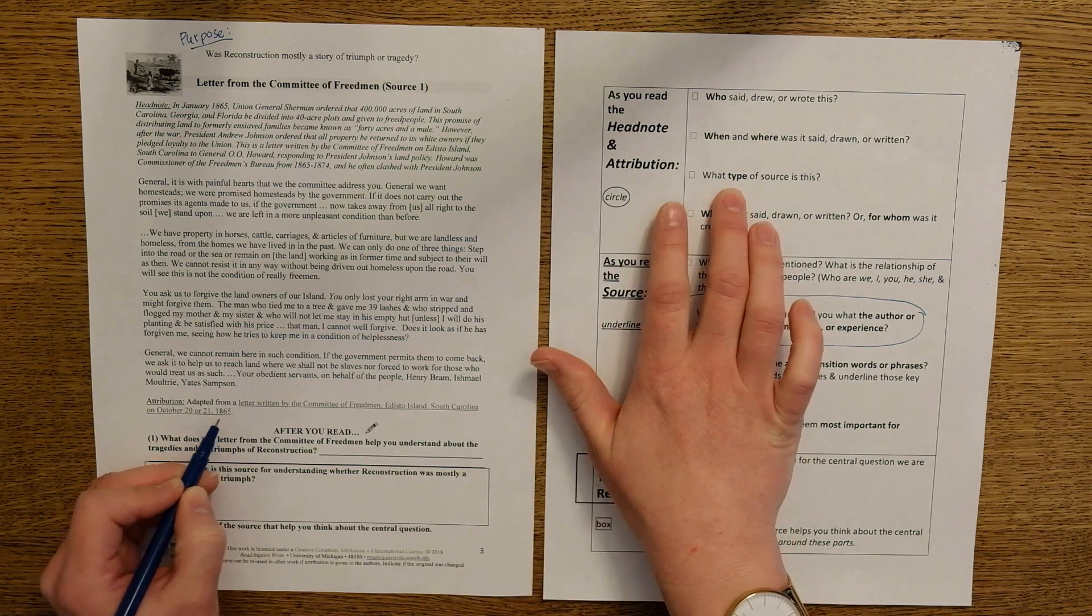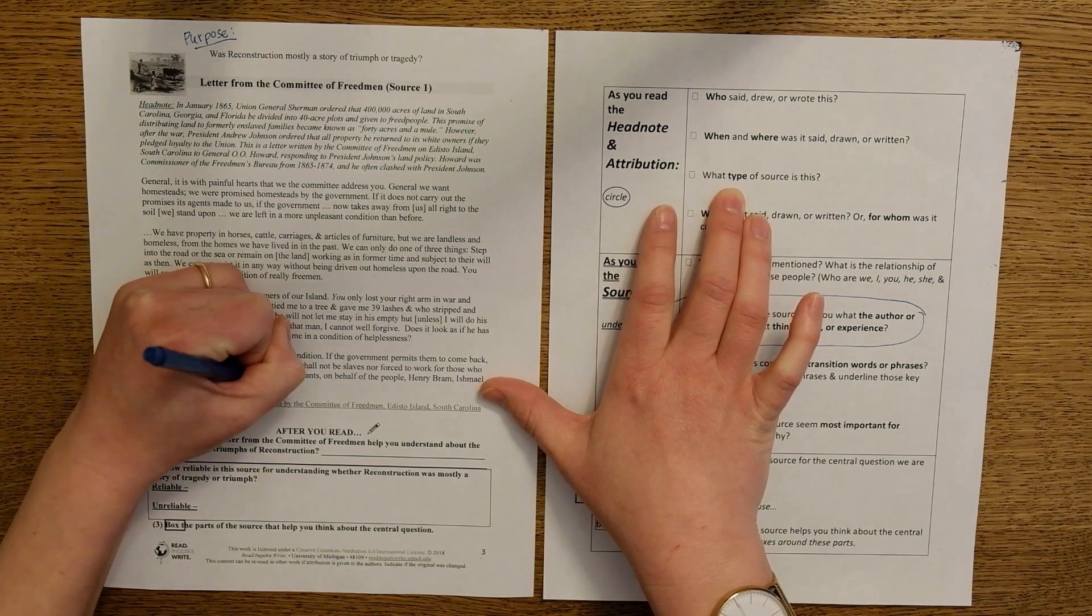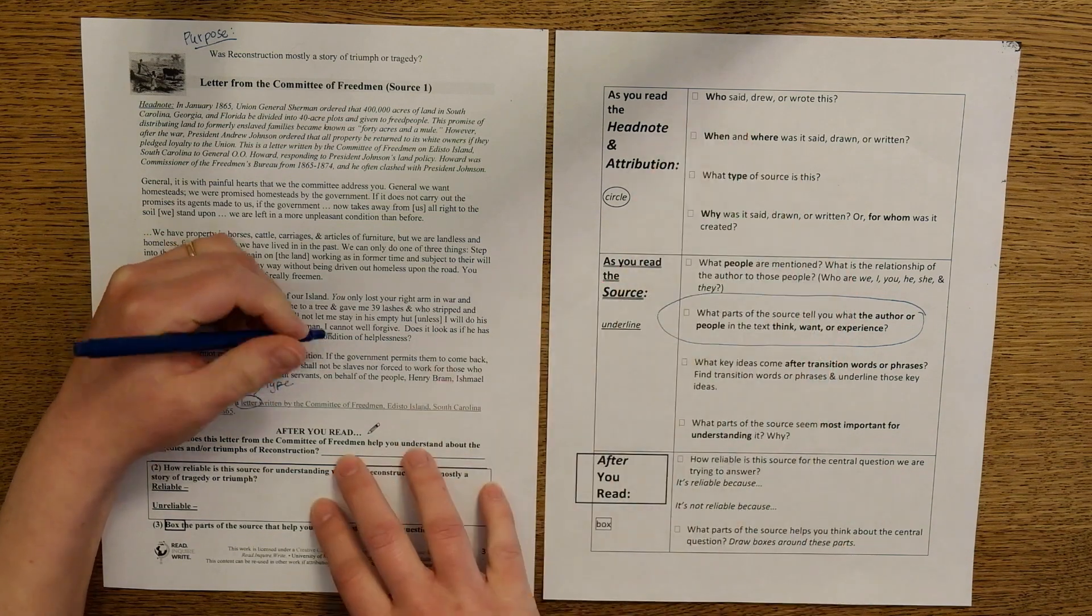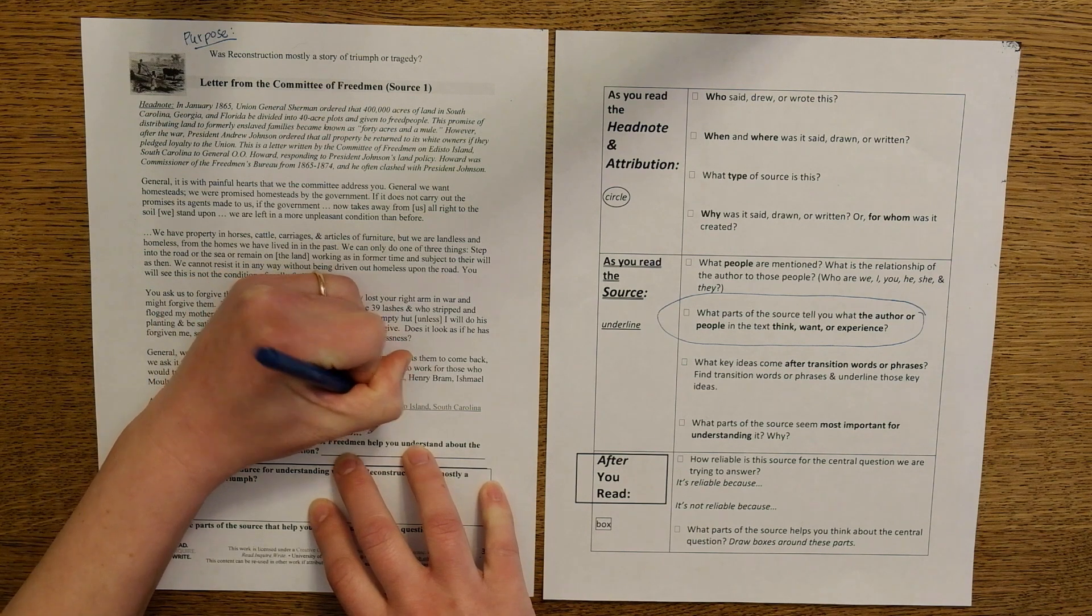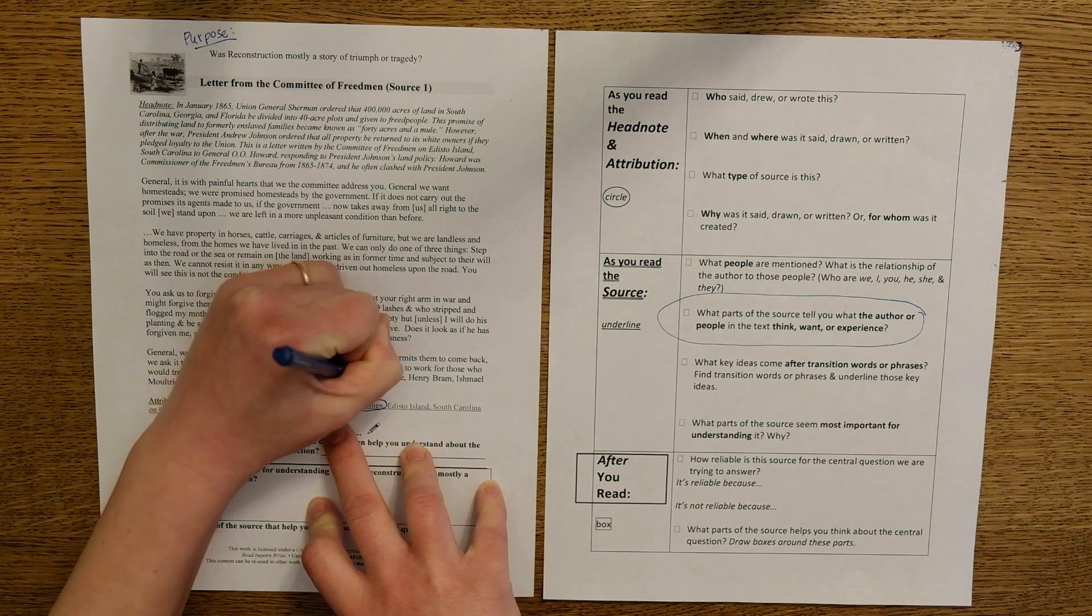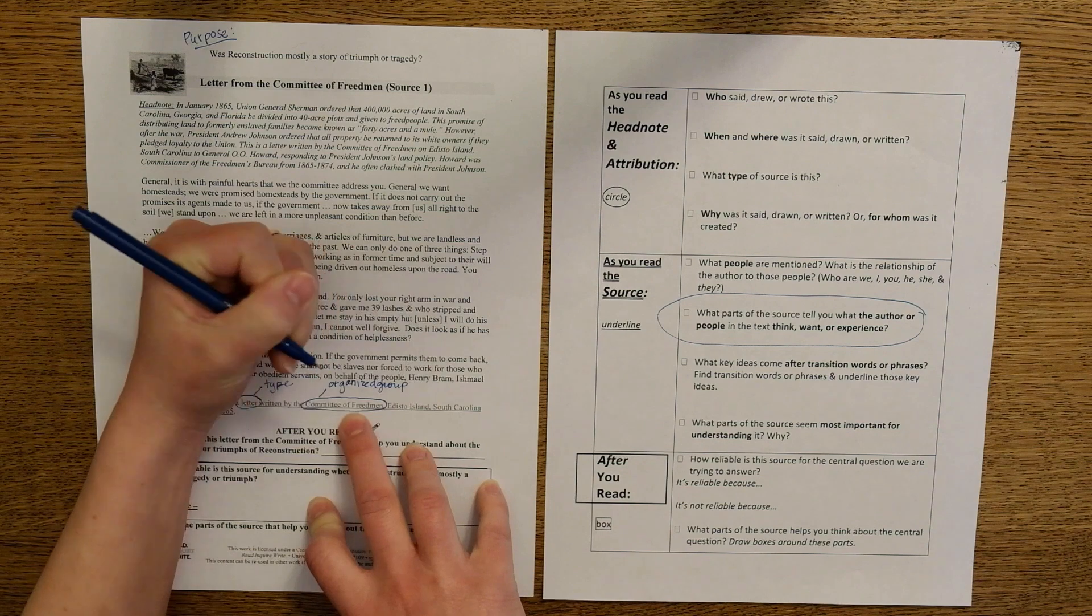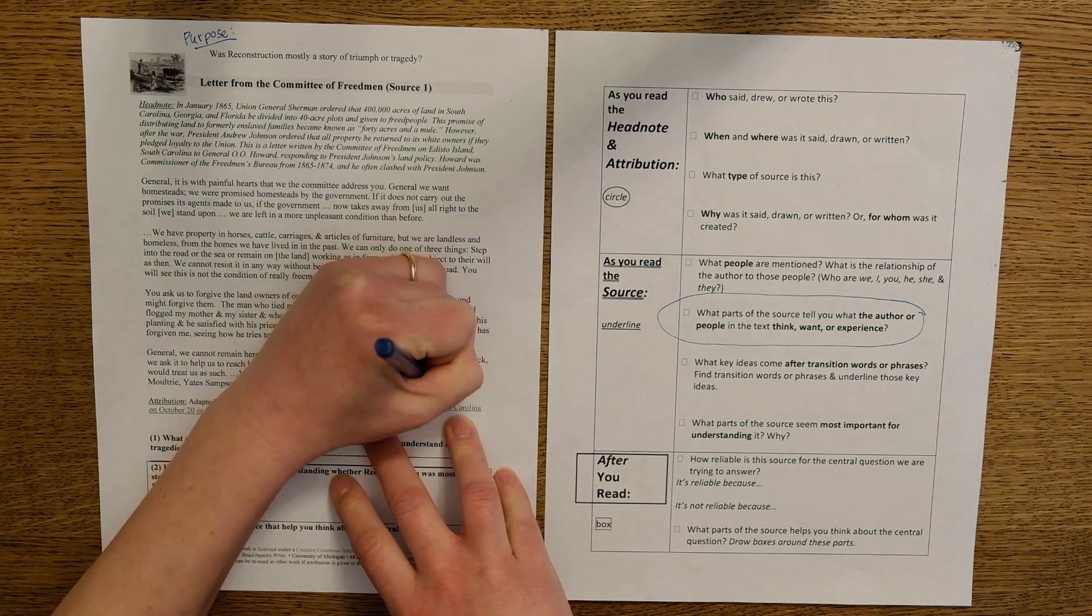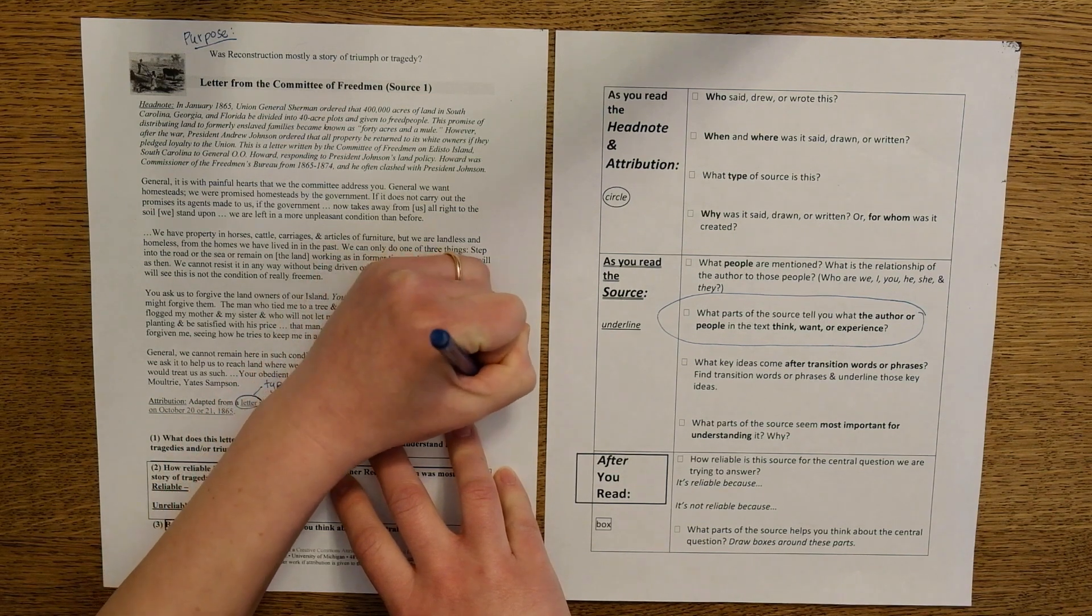So we know that the type of source here is a letter. And we know who created this letter is the Committee of Freedmen. So committee is an organized group.